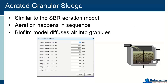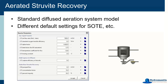We also have our relatively new aerated granular sludge — the Narita type system. This one has a very similar aeration setup to what we have in our SBRs because it is a cyclical type of operation: we have filling and loading, aerated periods and non-aerated periods, and so on. When you open up the operation menu, you'll find that you have to specify how long you're aerating and at what airflow rate. Aerated struvite recovery has its own model — it's actually pretty much our standard model, just with different default settings for oxygen transfer efficiency and alpha.